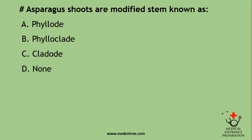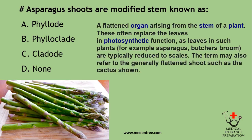Asparagus roots are modified stems known as: phyllode, phylloclad, cladode, or none? The correct answer is cladode — a flattened organ arising from the stem of a plant, often replacing leaves in photosynthetic function. In asparagus, true leaves are typically reduced to scales. The term may also refer to the generally flattened shoot such as in cactus.